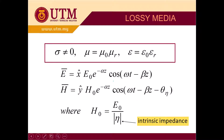For the lossy dielectric or lossy media, we have a value of sigma that is not equal to zero. We also have the value of mu, which interacts with the magnetic field, and epsilon, which interacts with the electric field. So we have mu equal to mu_naught times mu_r, and epsilon equal to epsilon_naught times epsilon_r.